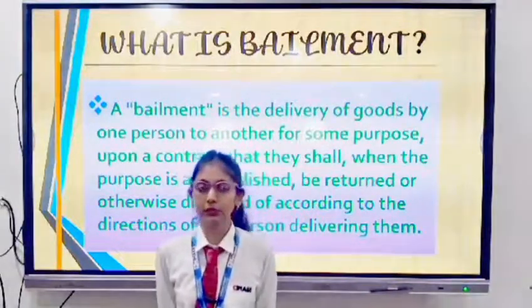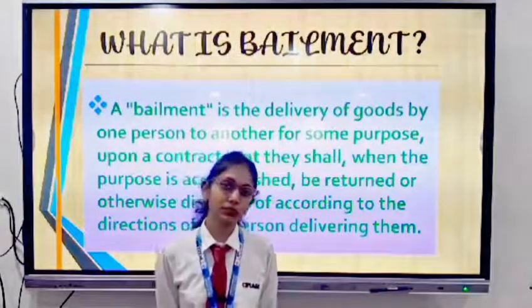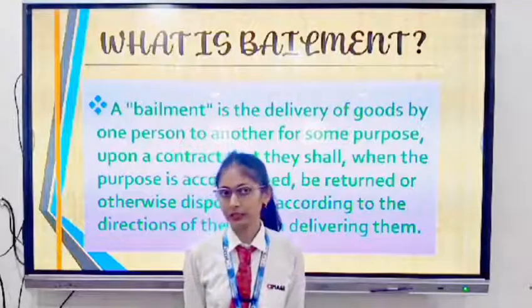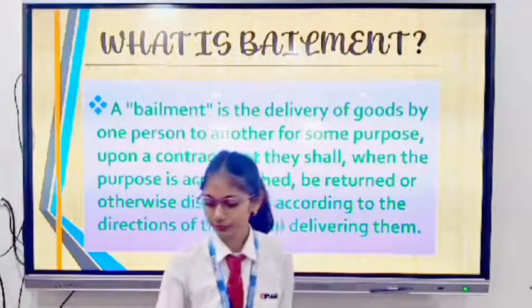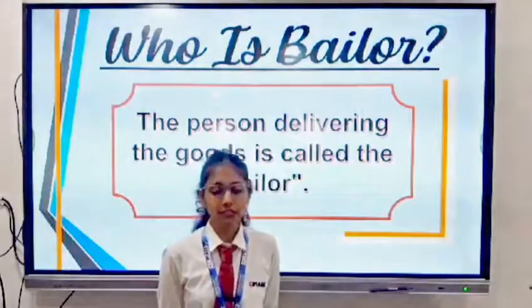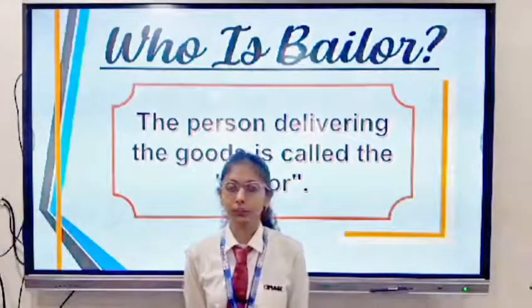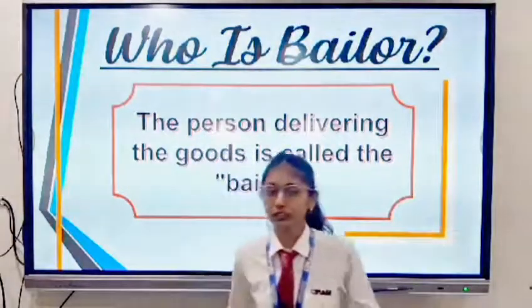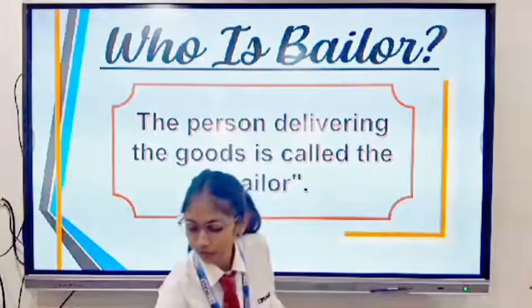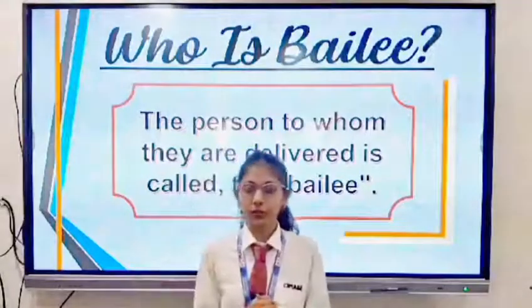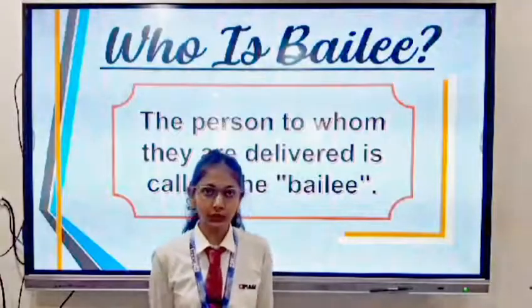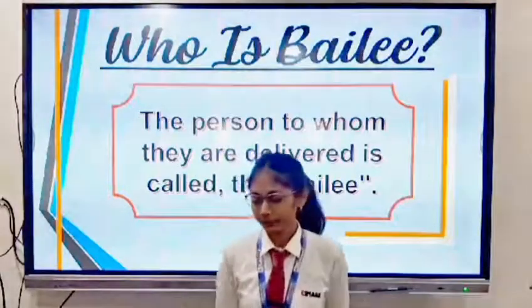In bailment, basically two persons are involved. One is known as the bailer and the second one is known as the bailee. The person who is delivering the goods is known as the bailer, and the person to whom the goods are delivered is known as the bailee.